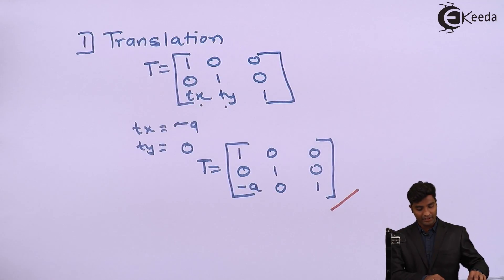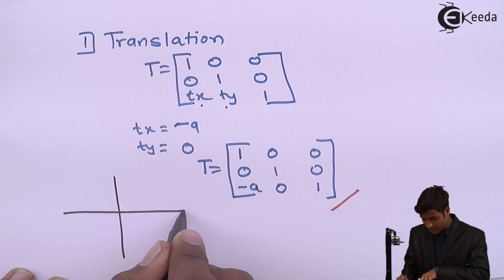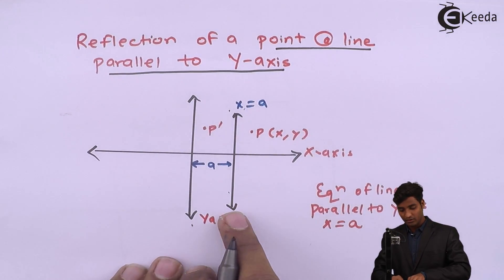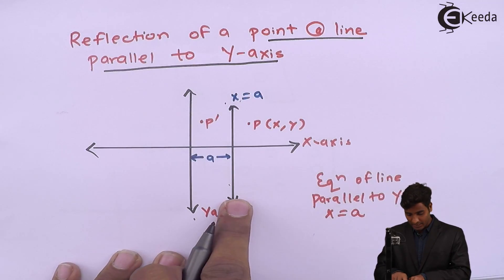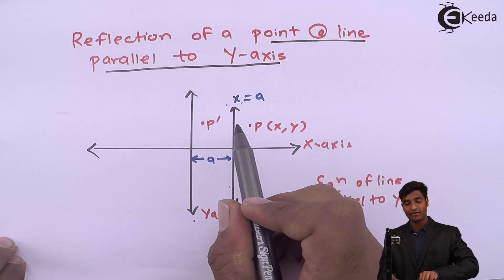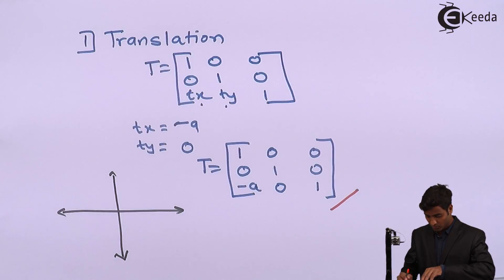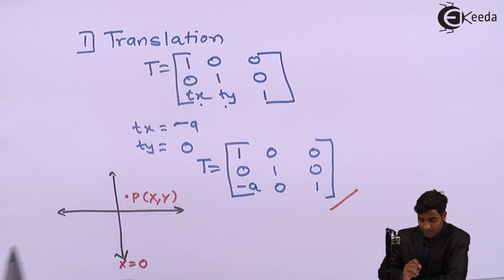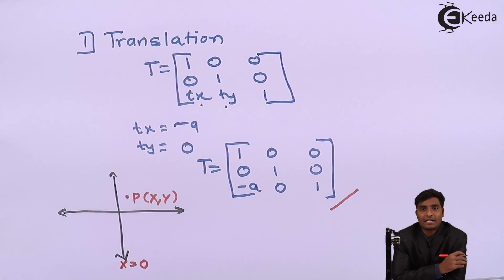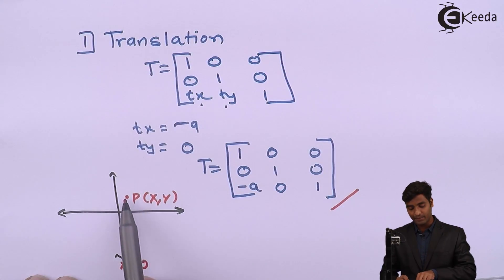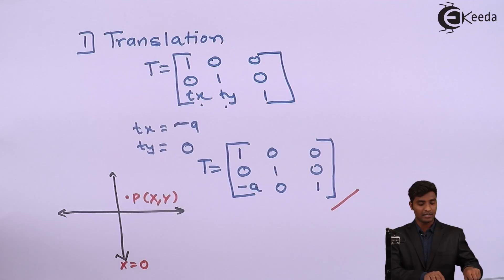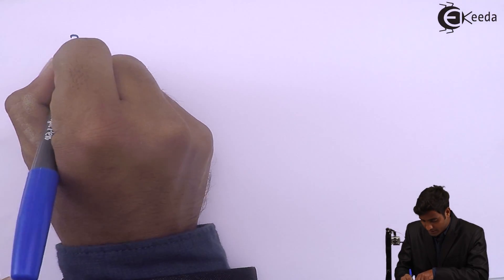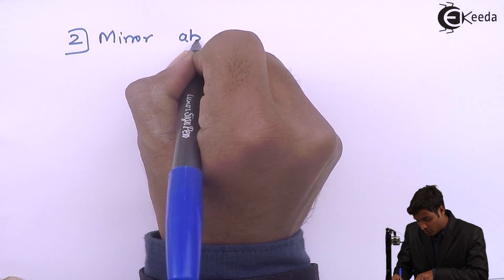After performing this translation, the line that was parallel to the y-axis will come onto the y-axis, where x equals 0. The point P(x, y) also shifts accordingly. Now the line is on the y-axis, and we have the standard matrices for mirror about the y-axis, so we can easily reflect this point. The second transformation is reflection or mirror about the y-axis.